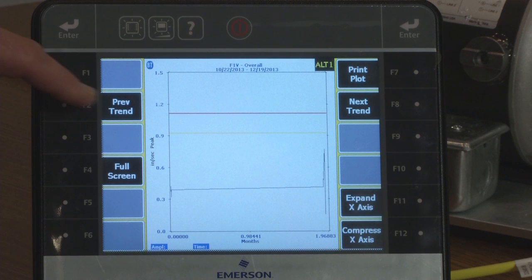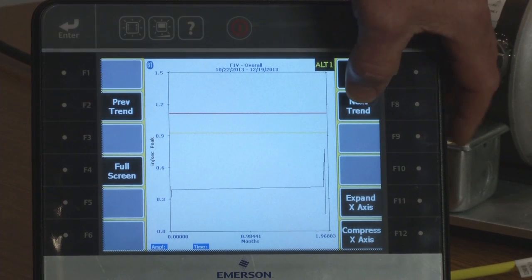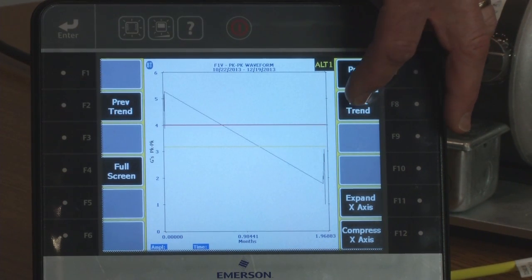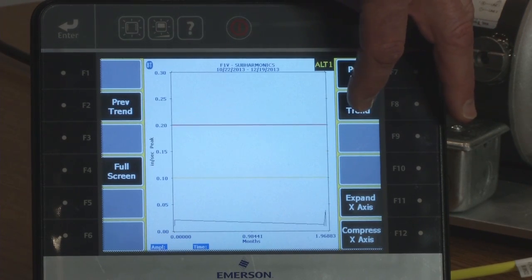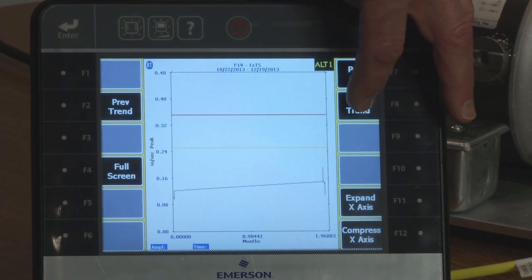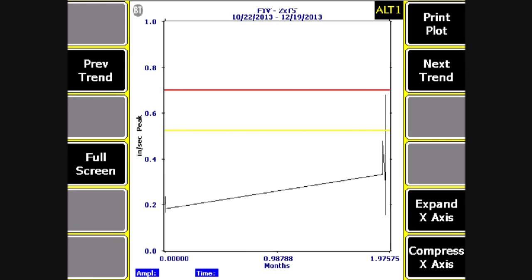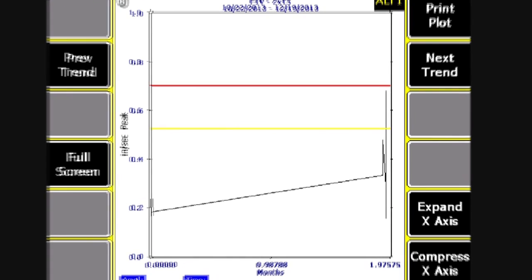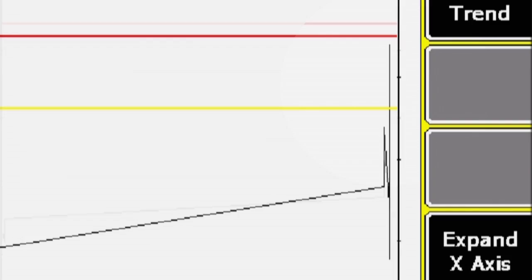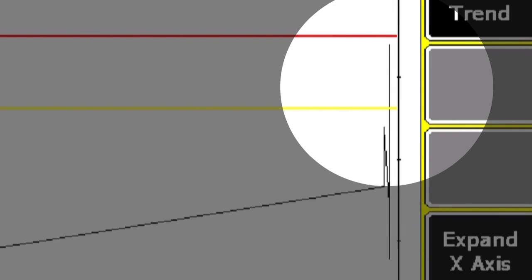I am going to go to the next trend and I can just page through the trends. And what I am particularly interested in is my two times trend. And this is my two times and you can see the dramatic increase over the periods of data collection to where it is almost into a high fault alarm.